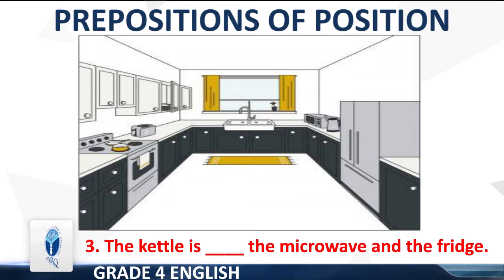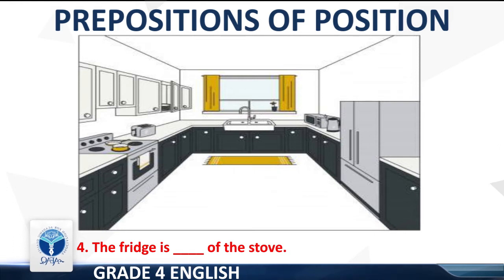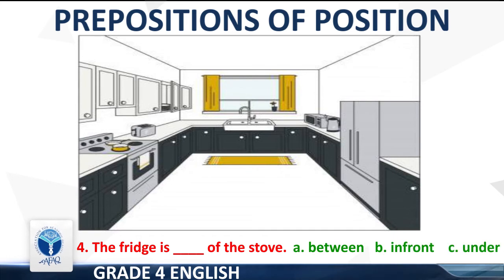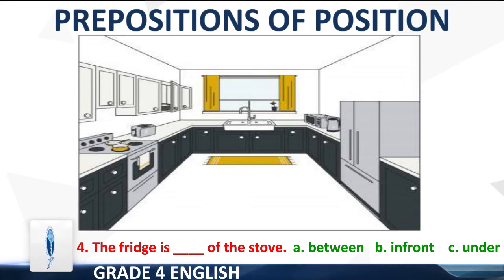Point 4: The fridge is dash of the stove. Options: A — between, B — in front, C — under. The right option is 'in front'. The sentence will be: the fridge is in front of the stove.